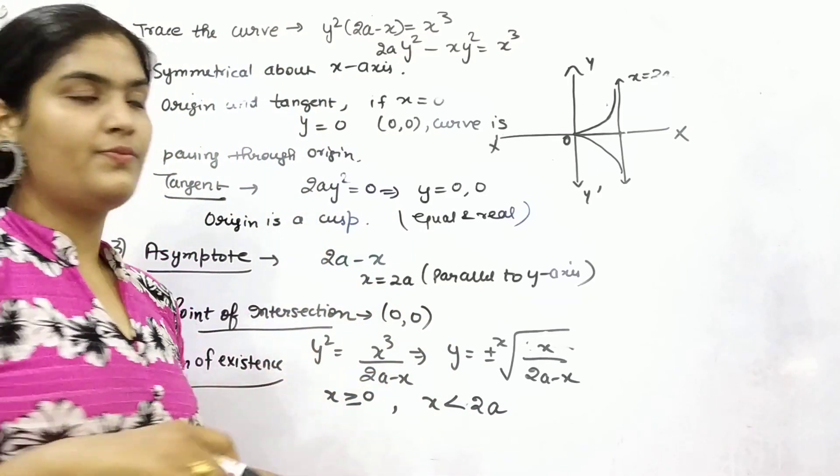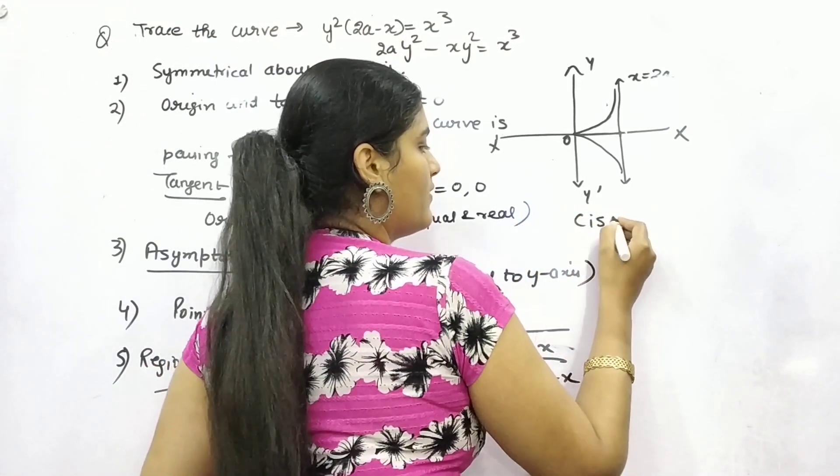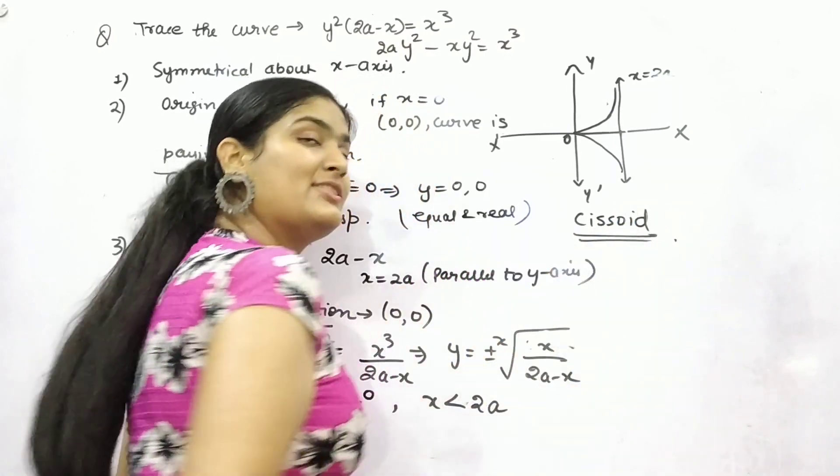And this type of curve is known as cissoid. What is it called? Cissoid, alright?